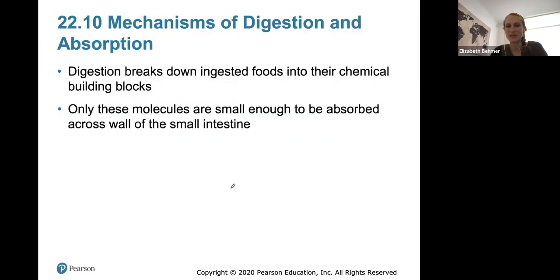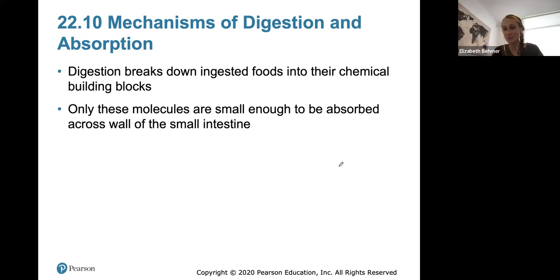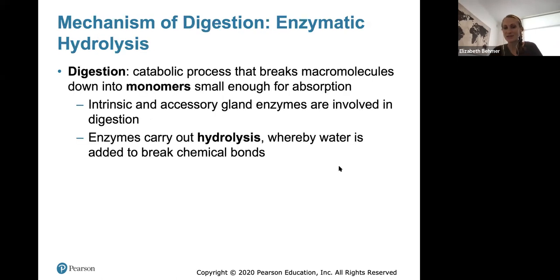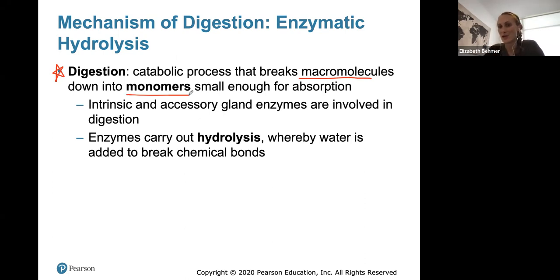Now a little bit of the physiology of digestion and absorption. Digestion breaks down ingested foods into their chemical building blocks; only these small molecules can be absorbed across the wall of the intestine. Digestion is a catabolic process — it breaks down macromolecules into monomers, for example breaking down a polysaccharide into a simple sugar or monosaccharide. Intrinsic and accessory gland enzymes are involved, and they carry out hydrolysis, where water is added to break chemical bonds and break up these macromolecules.